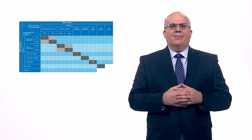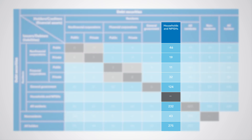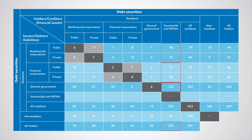Let's consider this numerical example of a from-whom-to-whom framework for debt securities. For example, in the fourth column, households and non-profit institutions serving households hold debt securities of 275, which is reflected in their claims on non-financial corporations of 65 (that is 46 plus 19), claims on financial corporations of 43 (that is 11 plus 32), claims on general government of 124, and claims on the rest of the world of 43.